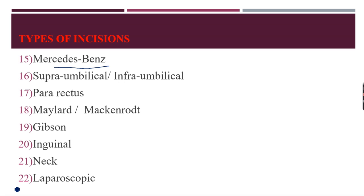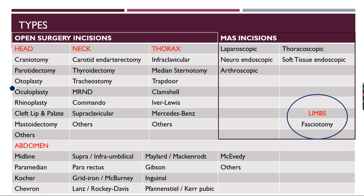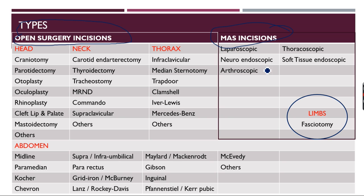It's difficult to remember all these incisions in order, so I have divided all these named incisions into various groups to make it easier to understand. For the purpose of discussion, we can divide them into open surgery incisions and minimal access surgery incisions. In minimal access surgery, these include laparoscopic, thoracoscopic, neuroendoscopic, soft tissue endoscopic, and arthroscopic groups.